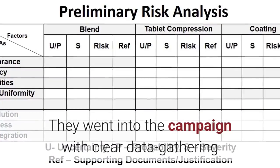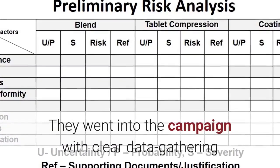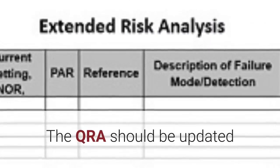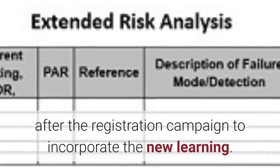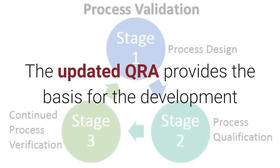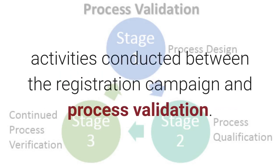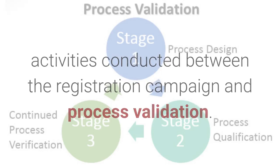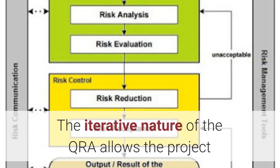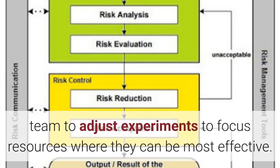They went into the campaign with clear data-gathering objectives based on the initial risk evaluation. The QRA should be updated after the registration campaign to incorporate the new learning. The updated QRA provides the basis for the development activities conducted between the registration campaign and process validation. The iterative nature of the QRA allows the project team to adjust experiments to focus resources where they can be most effective.